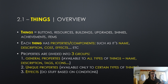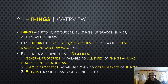Now we have mentioned things previously, but what things actually are — well, they are basically all the things listed here. There are I believe seven of them: buttons, resources, buildings, upgrades, shinies, achievements, and items. Those are all the things in the game.